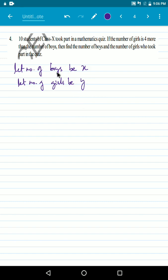I hope you are understanding my handwriting. Now, it is given that 10 students took part. That means if we add x plus y, that is number of boys plus number of girls is equal to 10. So we got the first equation very easily, right? x plus y is equal to 10. This is our first equation.